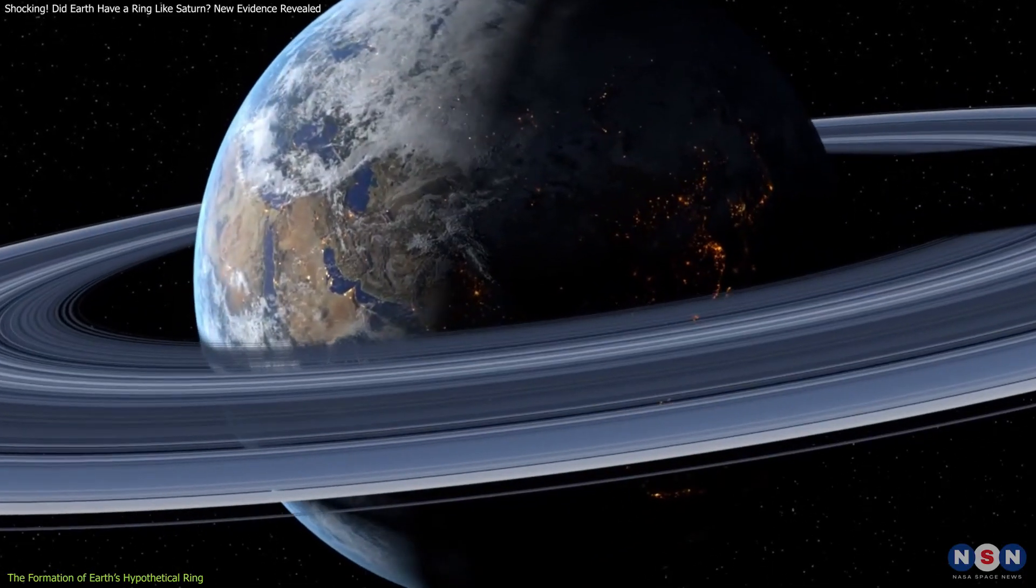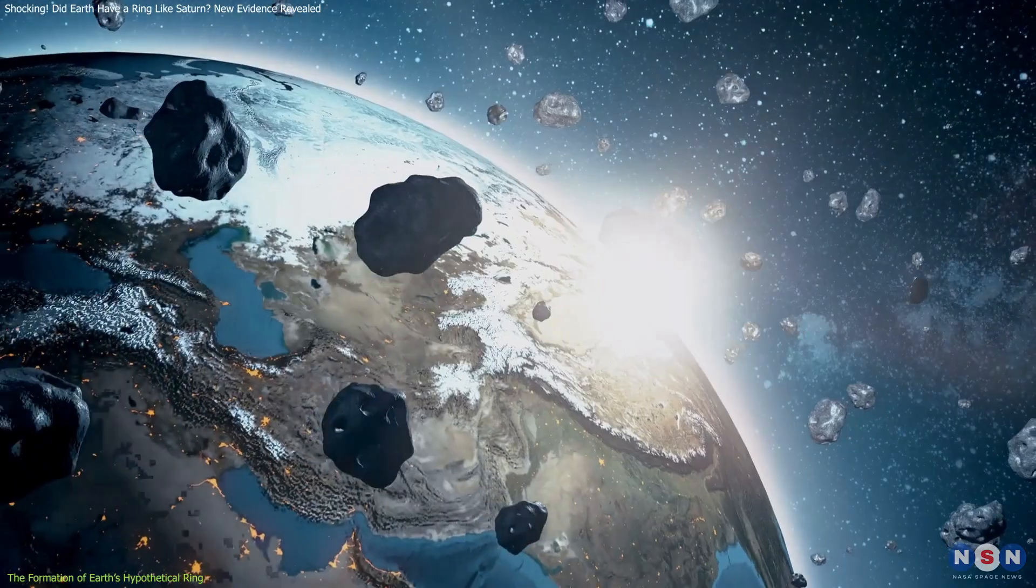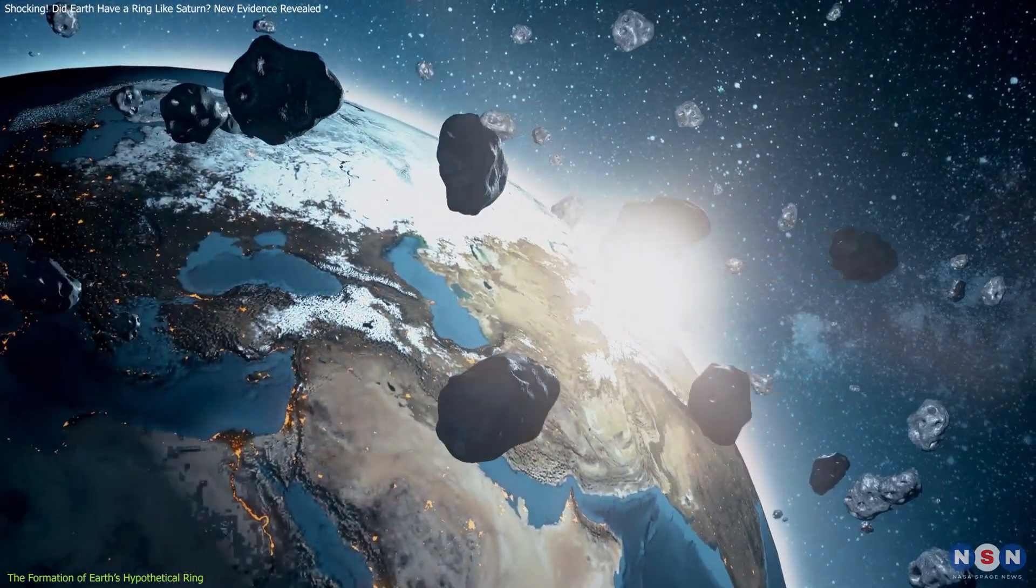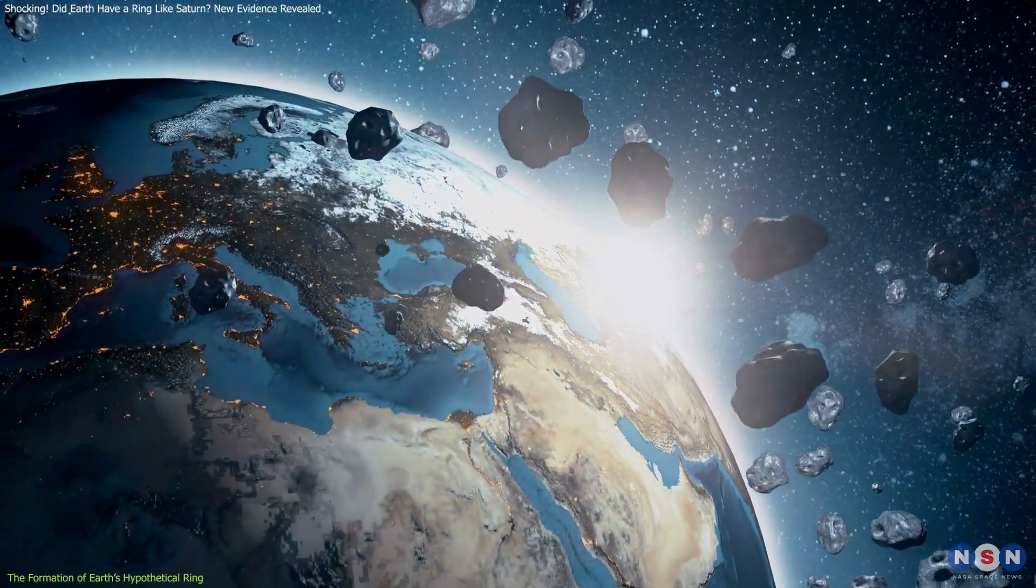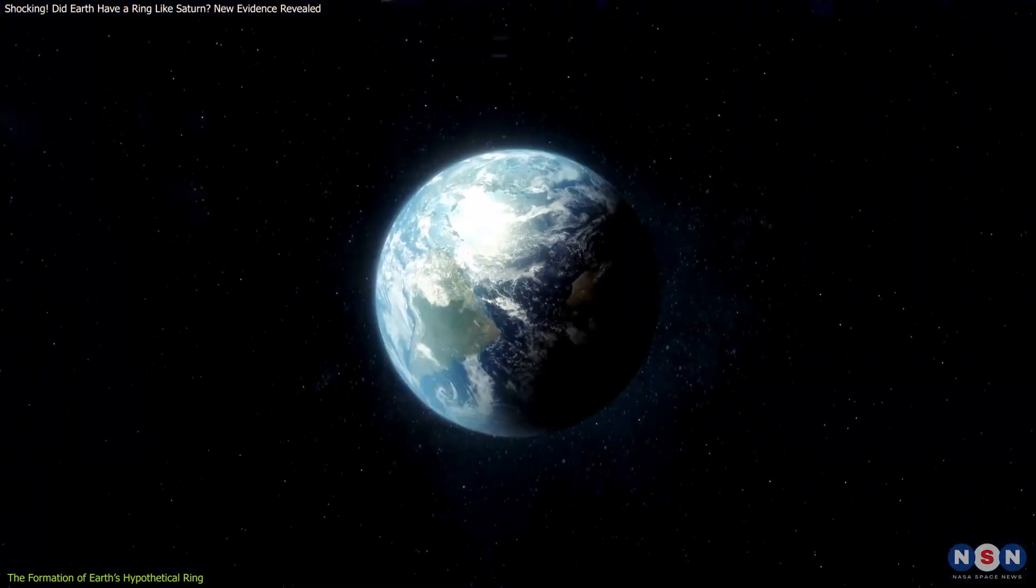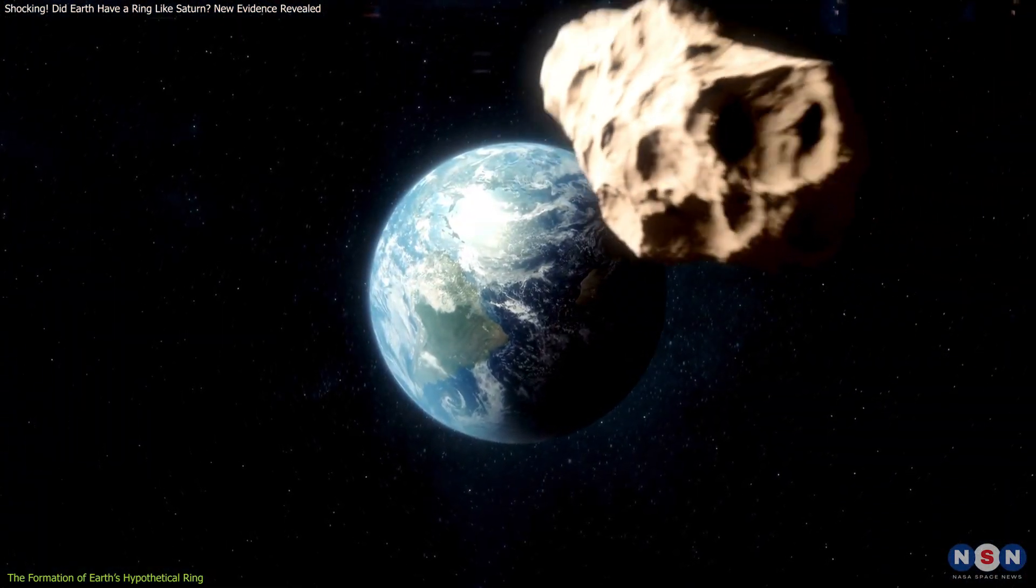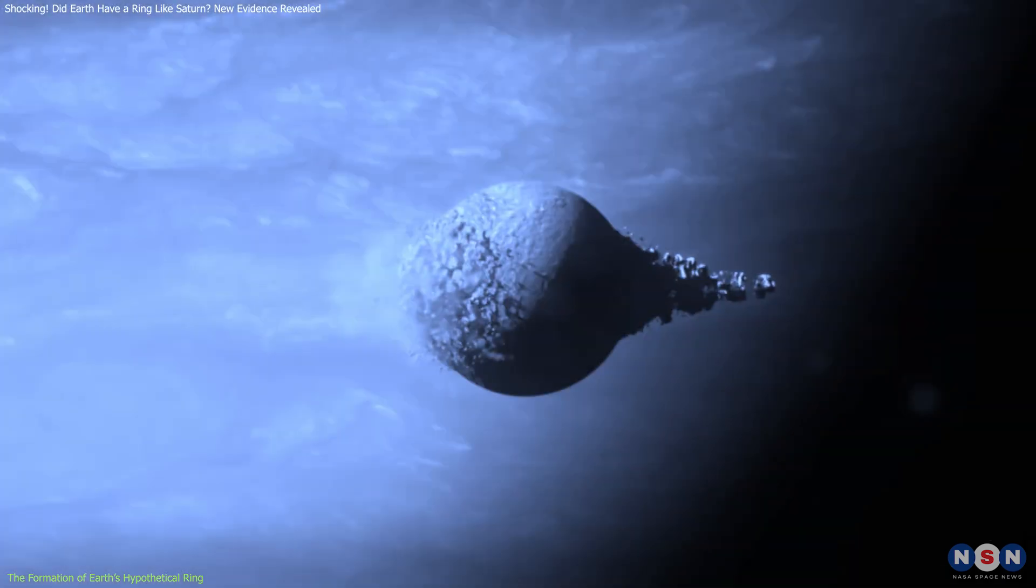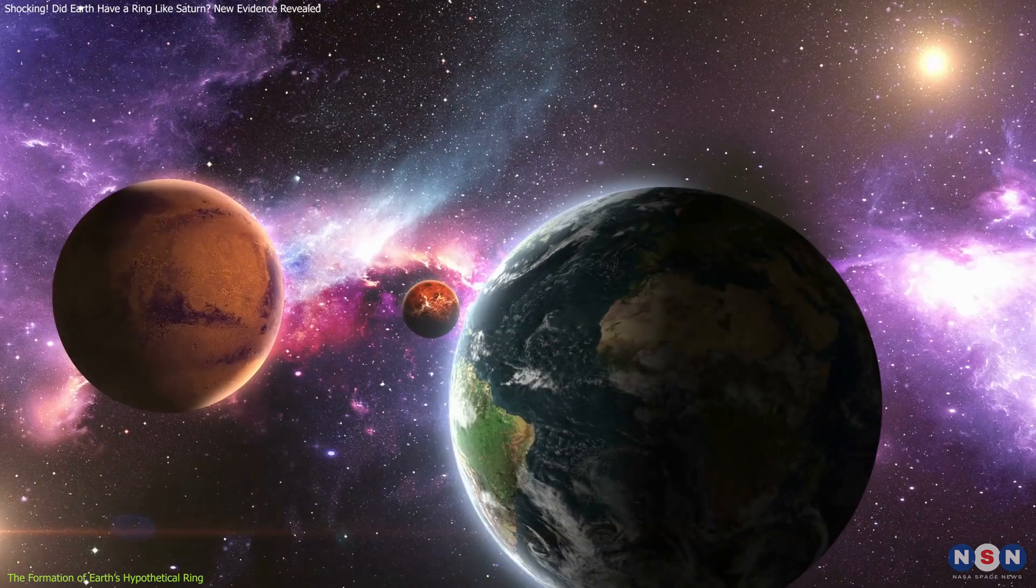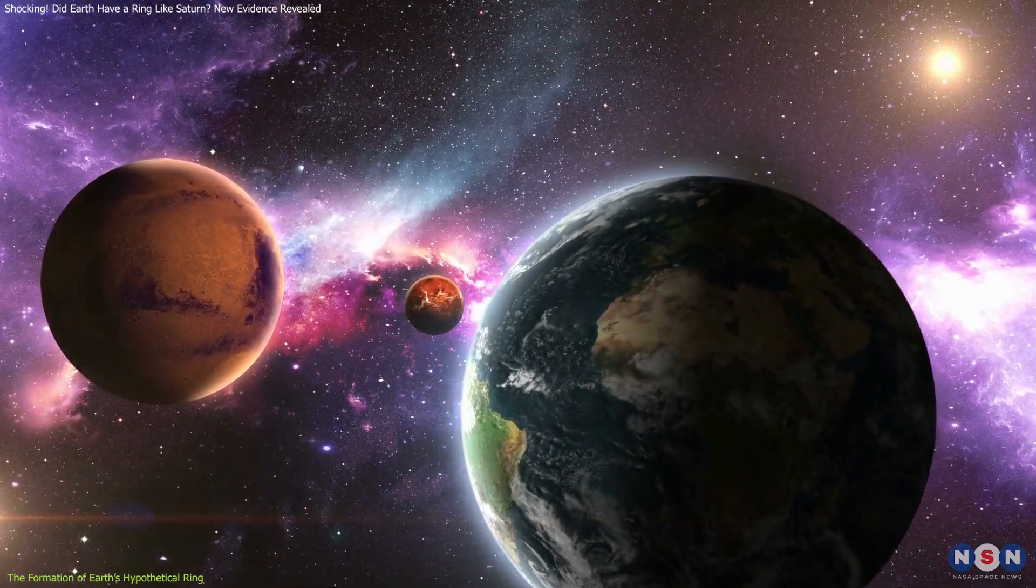This scenario is not entirely unprecedented. In fact, Earth regularly captures kilometer-sized objects into temporary orbits. However, a large asteroid passing within the Roche Limit and being torn apart is much rarer, especially for smaller planets like Earth and Mars.